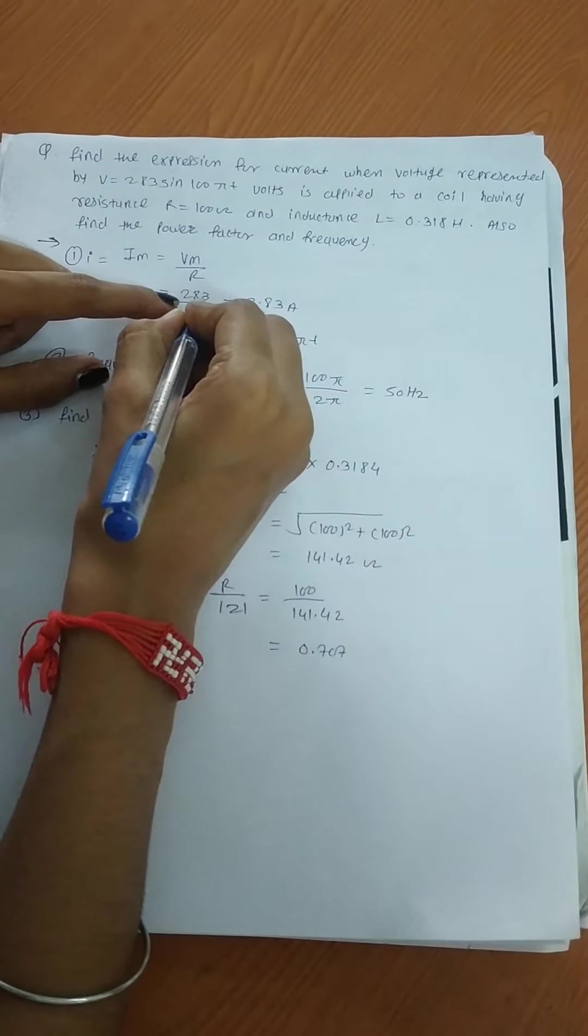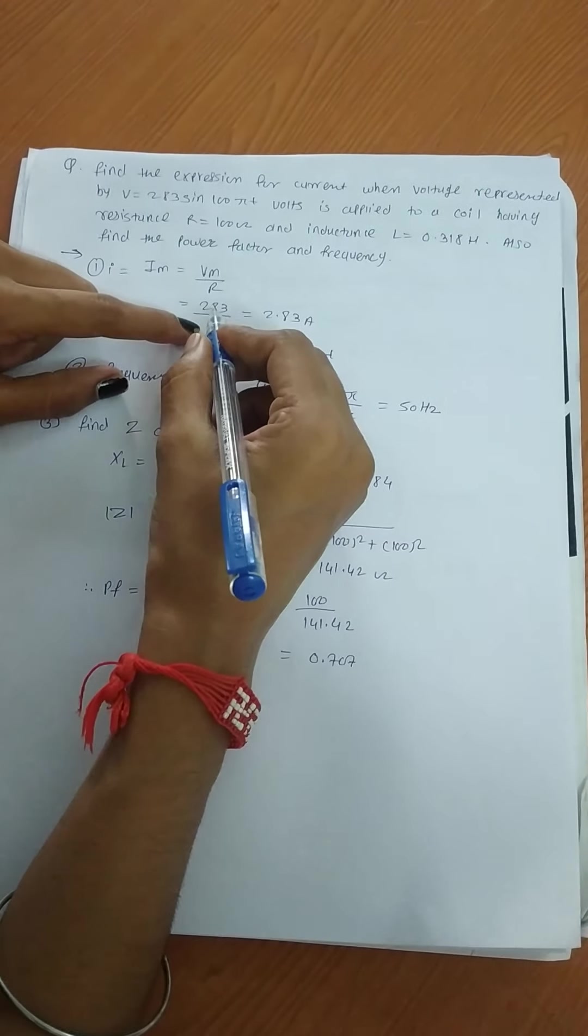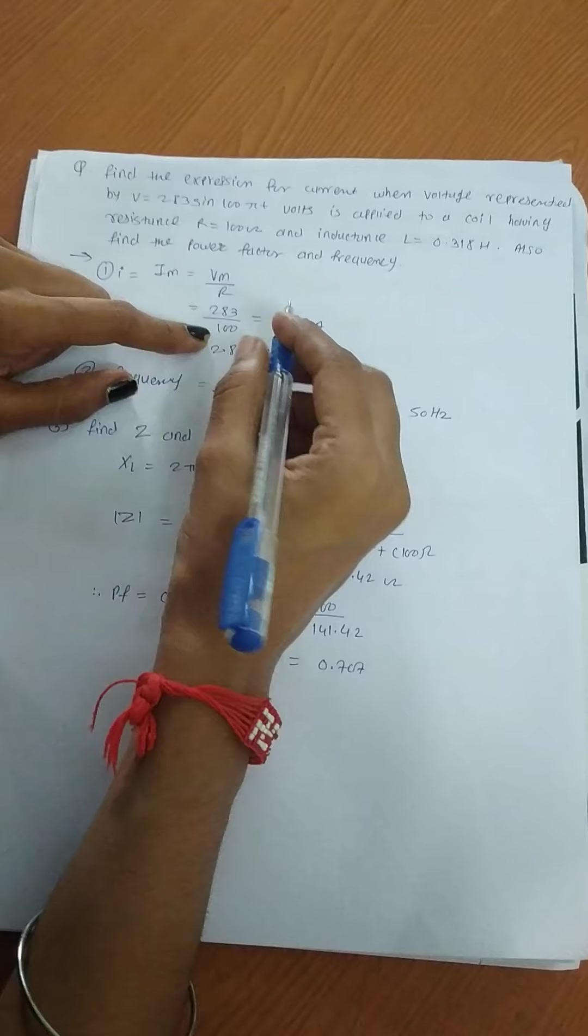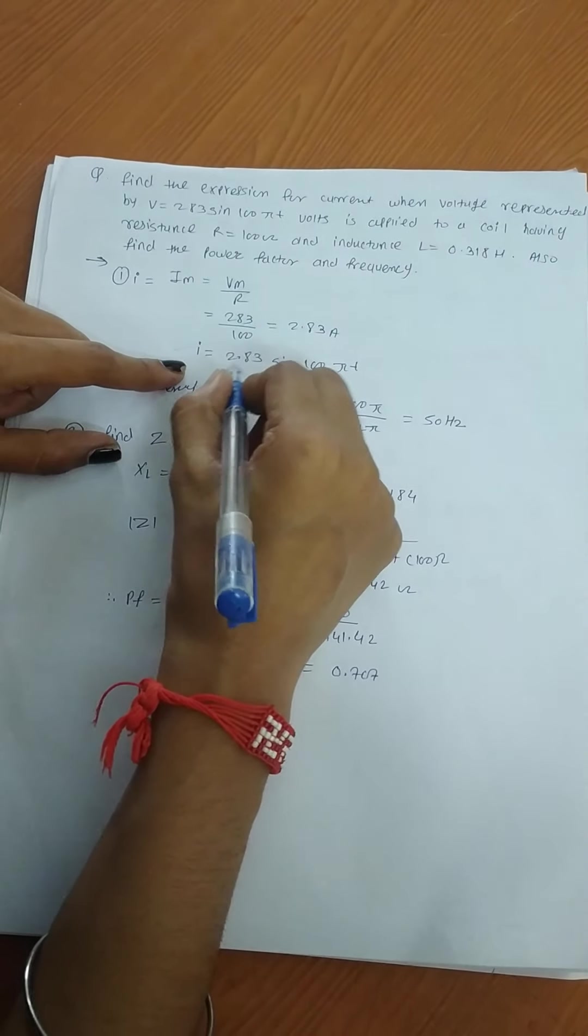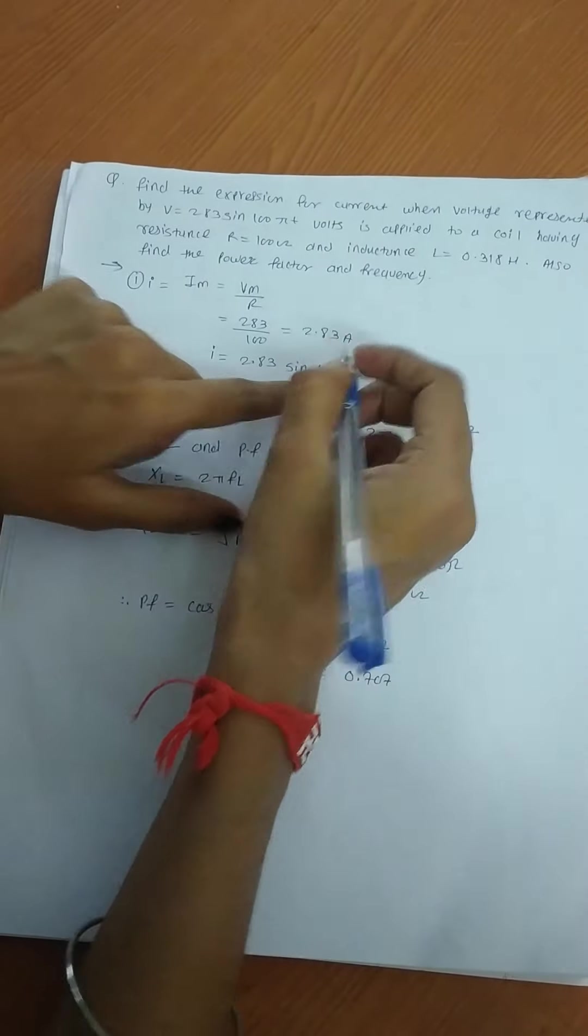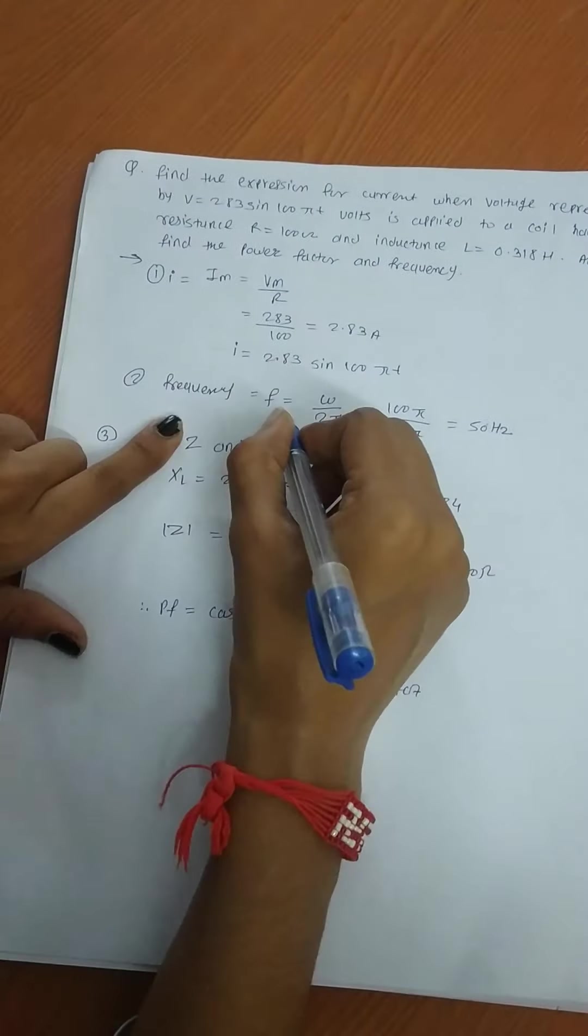IM = VM/R. The VM value given in the circuit is 283 and the resistance is 100, so the answer is IM = 2.83. Next, find frequency.